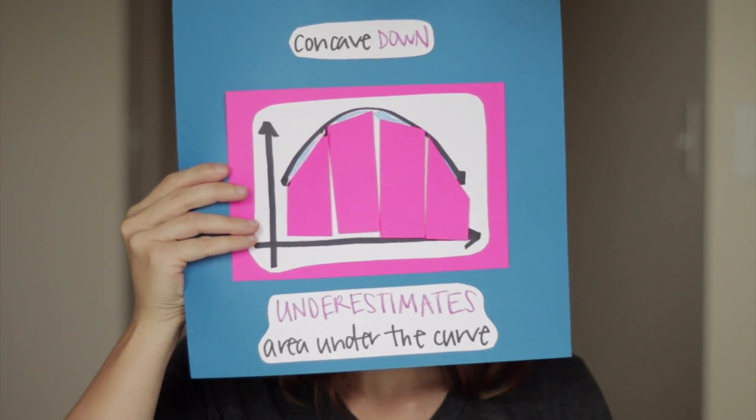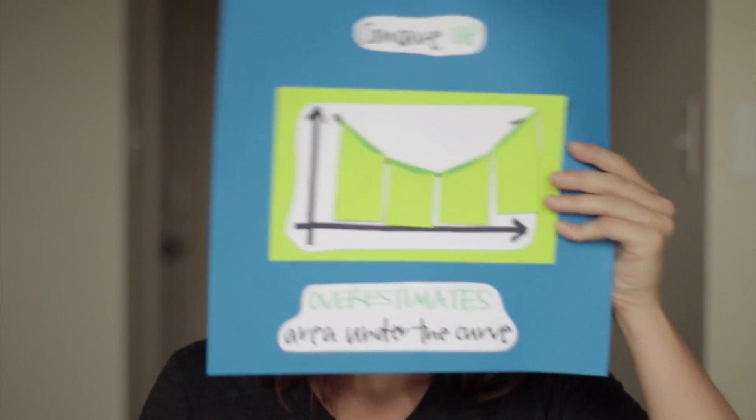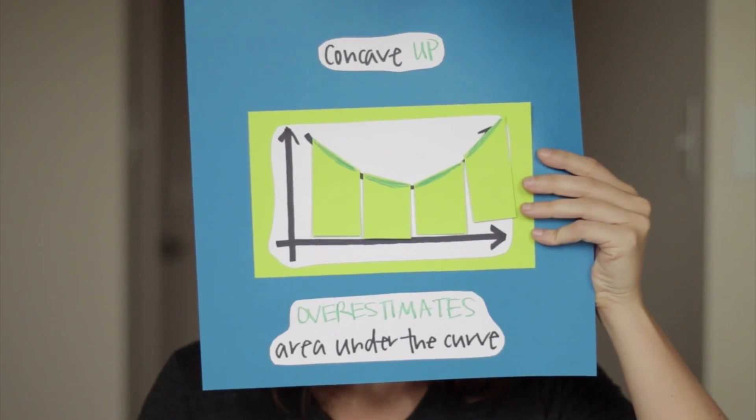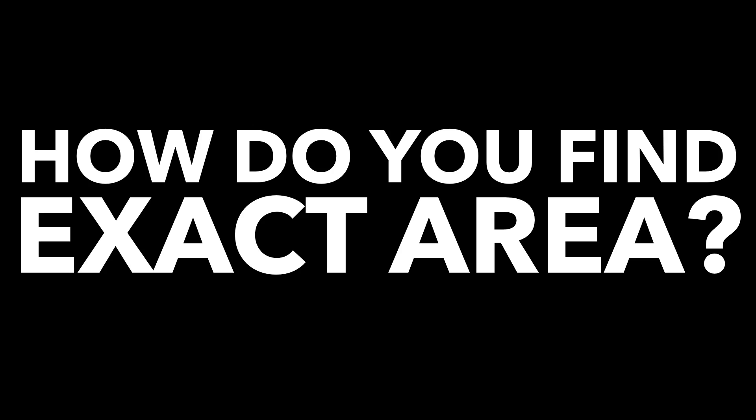So if trapezoidal rule underestimates a curve that's concave down and overestimates a curve that's concave up, what kind of function do you think you have to have in order for trapezoidal rule to find exact area? You guessed it. Whenever the function is linear, which means whenever the curve is a straight line.